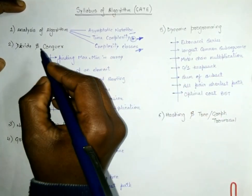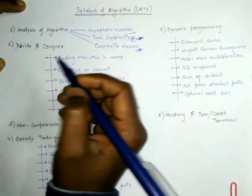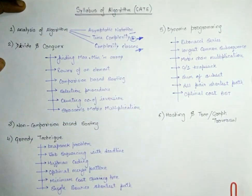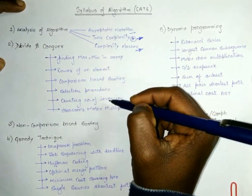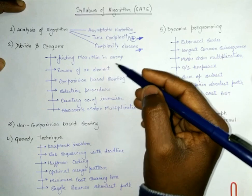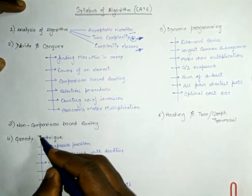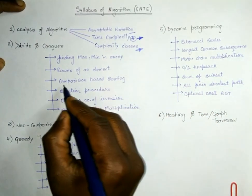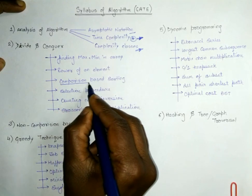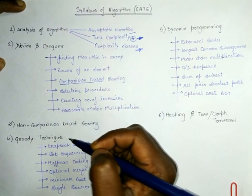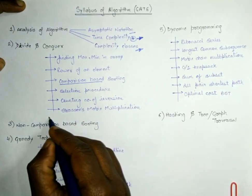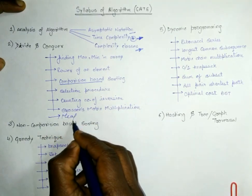After that, our second chapter will be divide and conquer. In this particular chapter, there are a few applications of divide and conquer. We have to learn those applications. The third comes is non-comparison based sorting. In divide and conquer, we have to learn comparison-based sorting, and after that we will see non-comparison based sorting. There's one more thing: heap sort. We will also see heap sort along with divide and conquer.